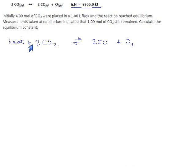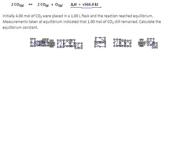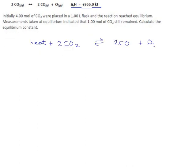For Le Chatelier's Principle, we don't particularly care how much heat, just that the heat is on the left, so it's a reactant. Now let's put in our initial, change, and equilibrium rows, and we'll see if we can get this thing organized.